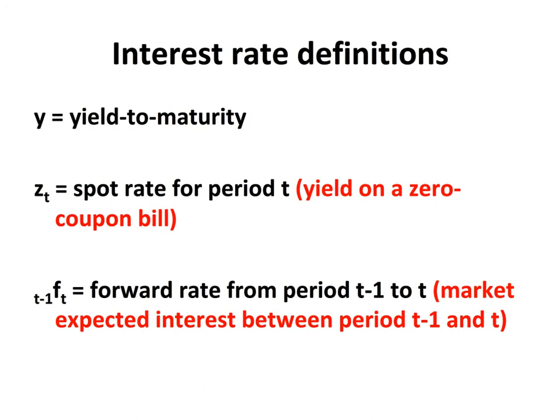Now we're going to define our three interest rates. We've already seen yield to maturity Y. We're also going to have a spot rate for period T, that's Z sub T, and this is a yield on a zero coupon bond or bill. The spot rate takes a cash flow sometime in a period and discounts it to the present using the same rate over the entire time period. A forward rate gives you the interest rate from T to T plus one. We'll show the exact mathematical definitions of these three rates on the next slide.